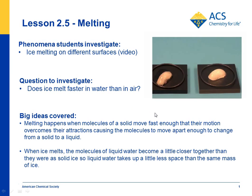In lesson 2.5, students see a piece of ice placed on two separate black squares, and the ice melts a lot faster on one square than the other, even though they're both at room temperature. Students then try a similar experiment: they put a piece of ice in a cup with no water, and a piece of ice in a cup with water. Both pieces of ice are at the same temperature, but one melts faster than the other.